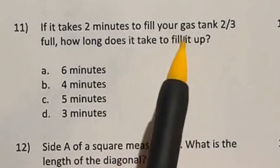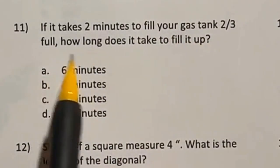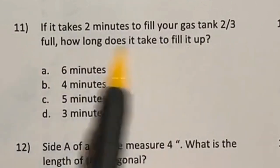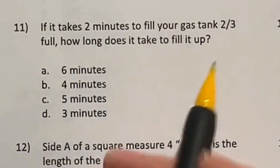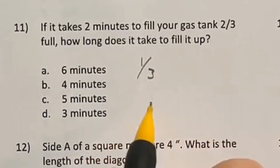It says here that it takes two minutes to fill your gas tank two-thirds of the way full. How long would it take to fill the whole thing up? Well, if it's two minutes for two-thirds, that means it's going one-third per minute.